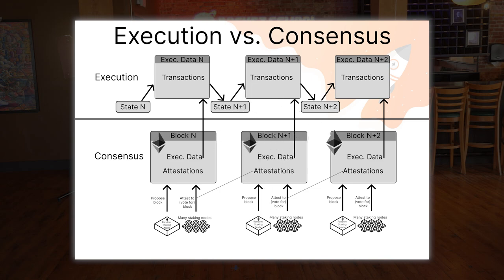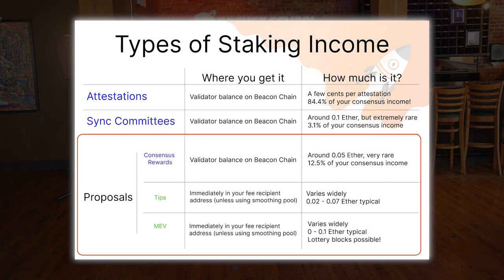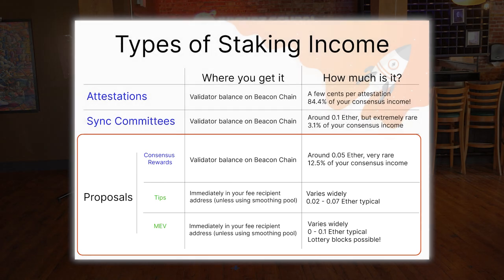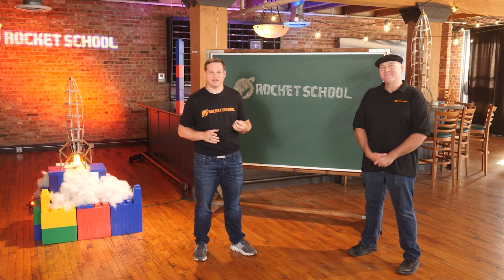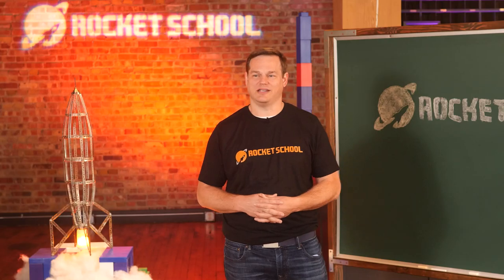These duties include voting on — or attesting to — new blocks as they get added to the chain, actually choosing or proposing new blocks themselves, and very rarely, sync committee participation, which is beyond the scope of this introduction. Consensus rewards are paid on the beacon chain, where they can't be used for anything, but are automatically withdrawn back to the execution layer address of the ETH staker's choice every few days.